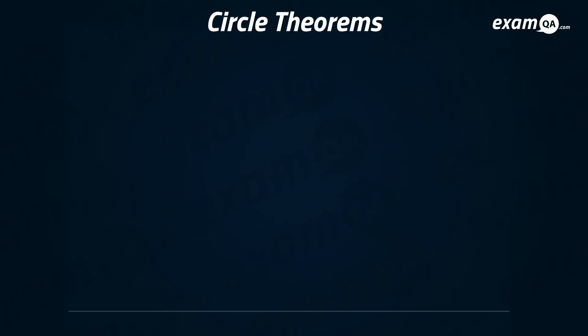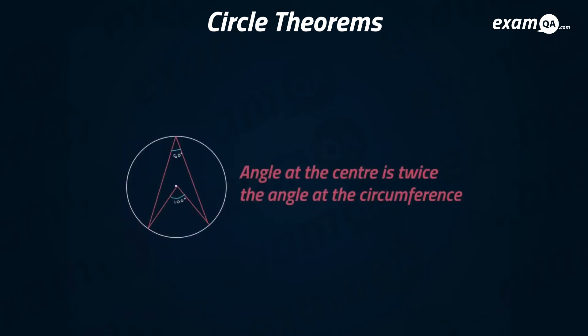The next theorem a lot of people refer to as the rocket theorem—it kind of looks like a rocket. Basically, if you have a rocket shape like this where it touches three sides of the circle, then you can say that the angle at the center is twice the angle at the circumference. So if this was 50 degrees, this would have to be 100 degrees because it's double the size.